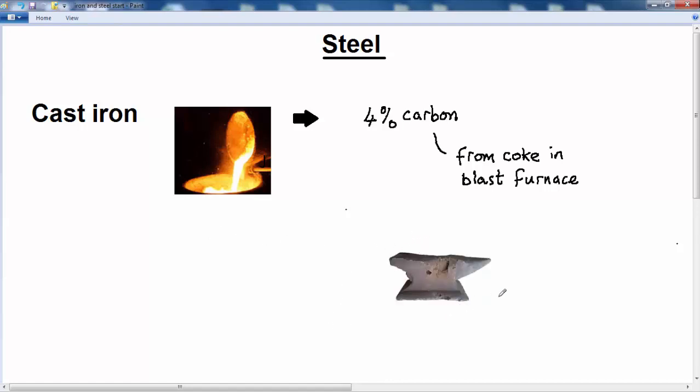As an example you can see this in this old blacksmith's anvil, it's a hard material which is just what you want if you're going to hammer things on an anvil. You want it to be hard, but as you can see bits of the anvil have got fractured and that's due to the fact that the carbon makes the cast iron brittle.